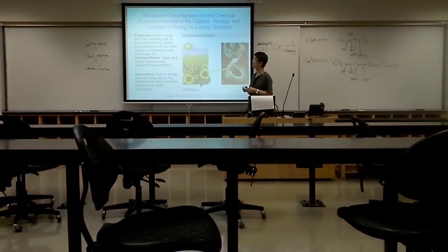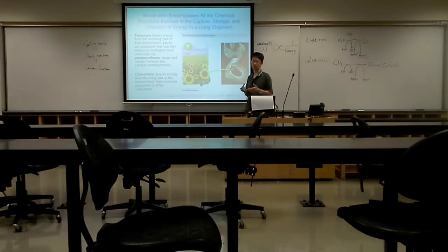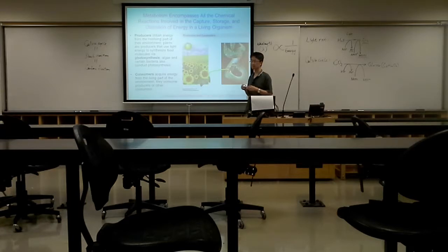First we need to talk about producers. Producers are the ones that can make food by themselves. Examples are mainly plants, algae and bacteria. They make food by photosynthesis, and as the main purpose of photosynthesis is to make glucose, all these plants, algae and bacteria can make glucose by themselves.